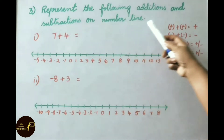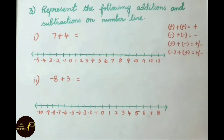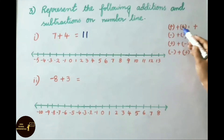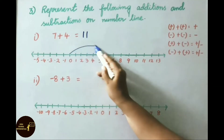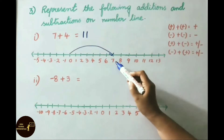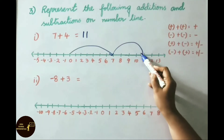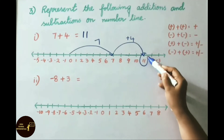Question 3: Represent the following on a number line. First: 7 + 4 = 11. When two positive integers are added, the result is positive. On the number line, start at 7, then count 4 places to the right — 1, 2, 3, 4 — and you reach 11. So 7 + 4 = 11.